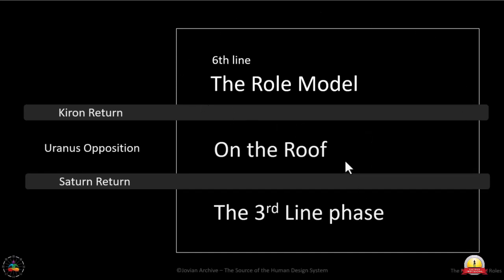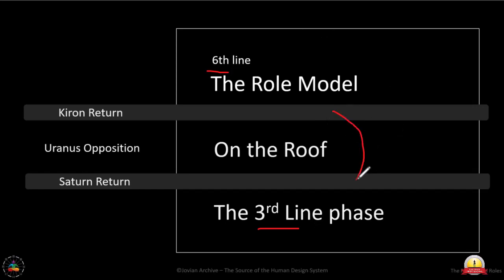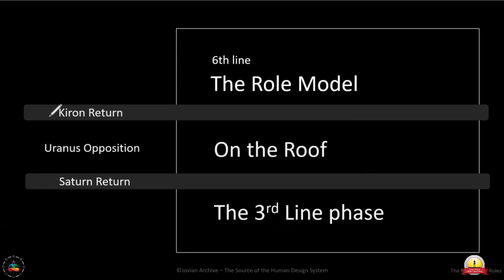If they drag the pessimism here, they're never going to heal from that first 30-year cycle. If they can't get rid of it, if they bring it through the roof phase, they never get to the other side — because the third-line theme is so devastating when you're incorrect. In fact, the not-self plague of these role models is hanging on to that pessimism. Remember, third lines are designed by nature to be pessimistic — a natural protective layer. But that's not what a six is. The six on the roof becomes something unique and different. And that's its cocooning phase — the cocooning phase in the Uranus opposition era.